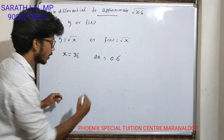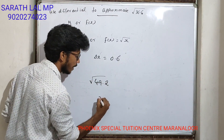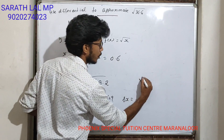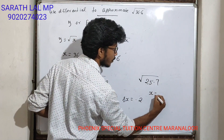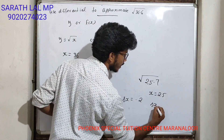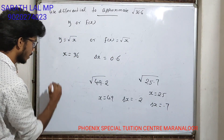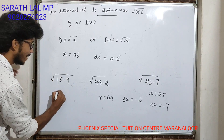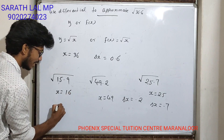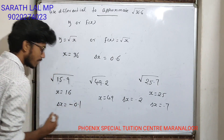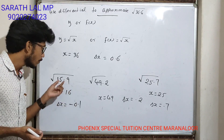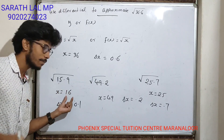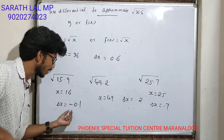What is delta x? For example, if we have 49.2, then x equals 49 and delta x equals 0.2. If we have 25.7, then x equals 25 and delta x equals 0.7. If we have 15.9, then x equals 16 and delta x equals minus 0.1. So for 36.6, x equals 36 and delta x equals 0.6.